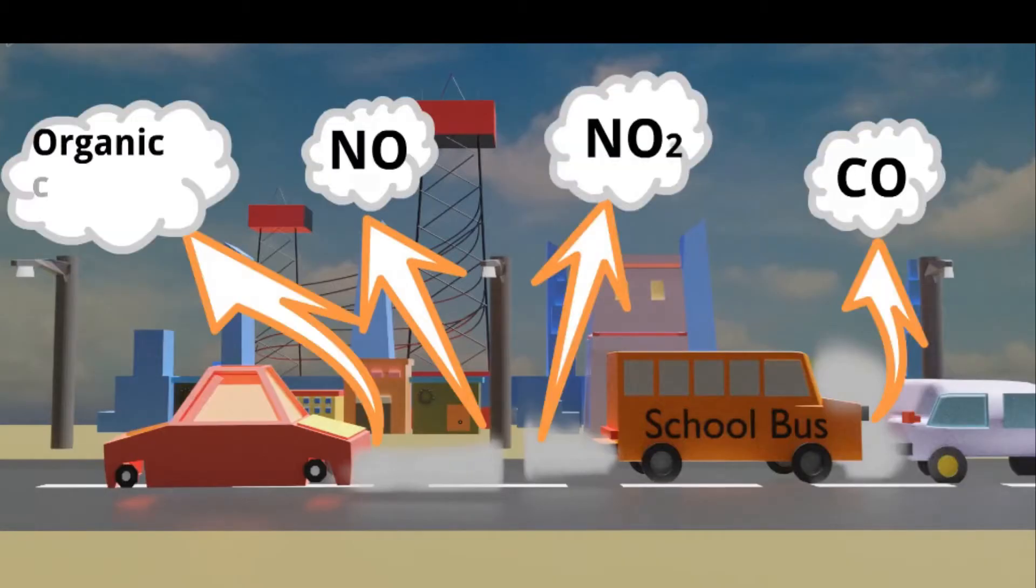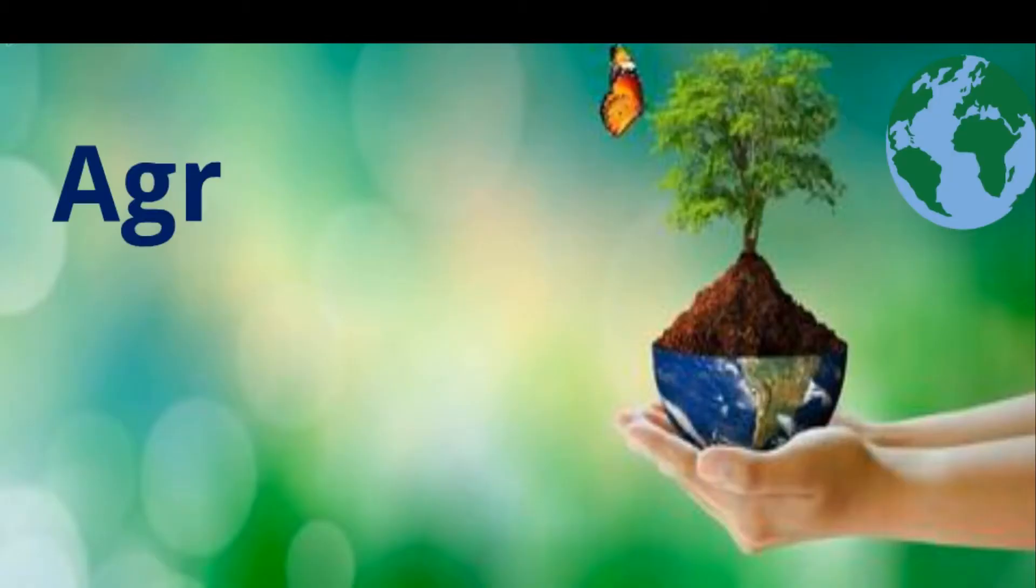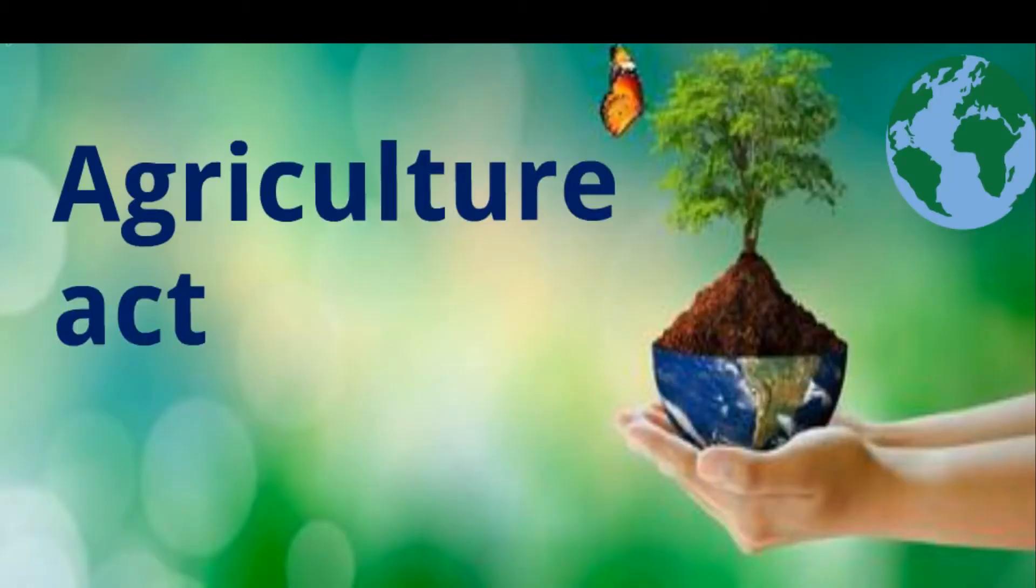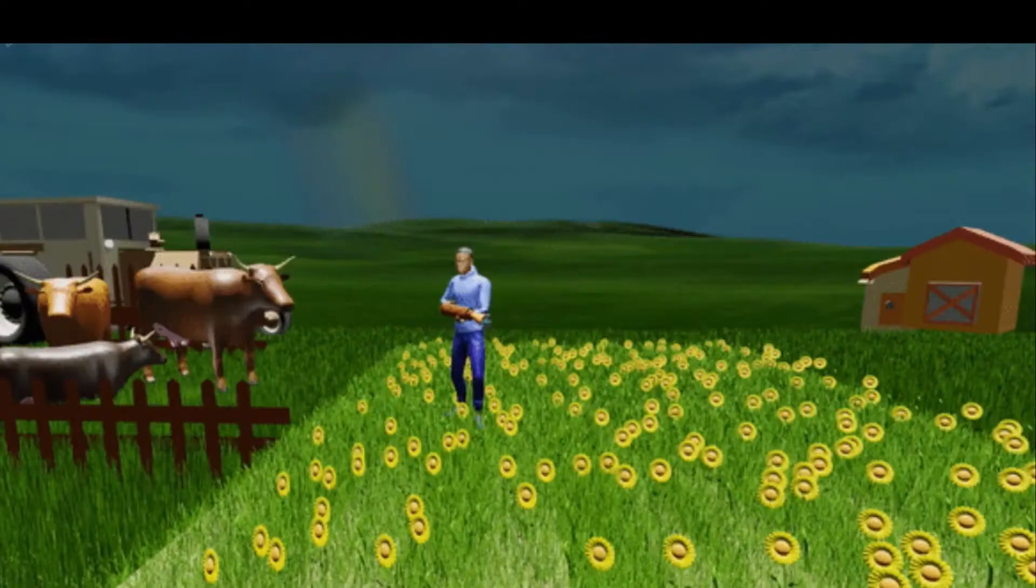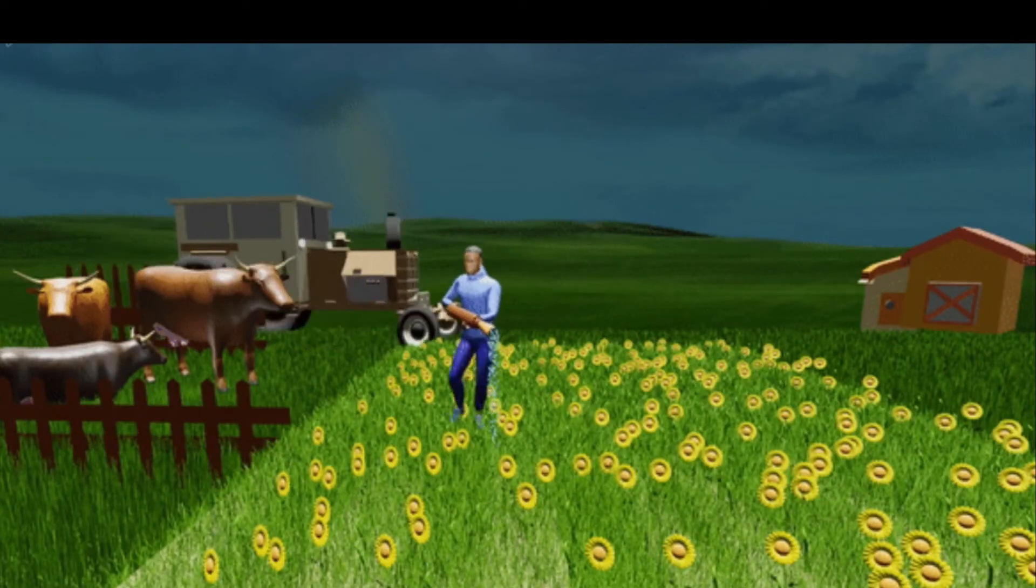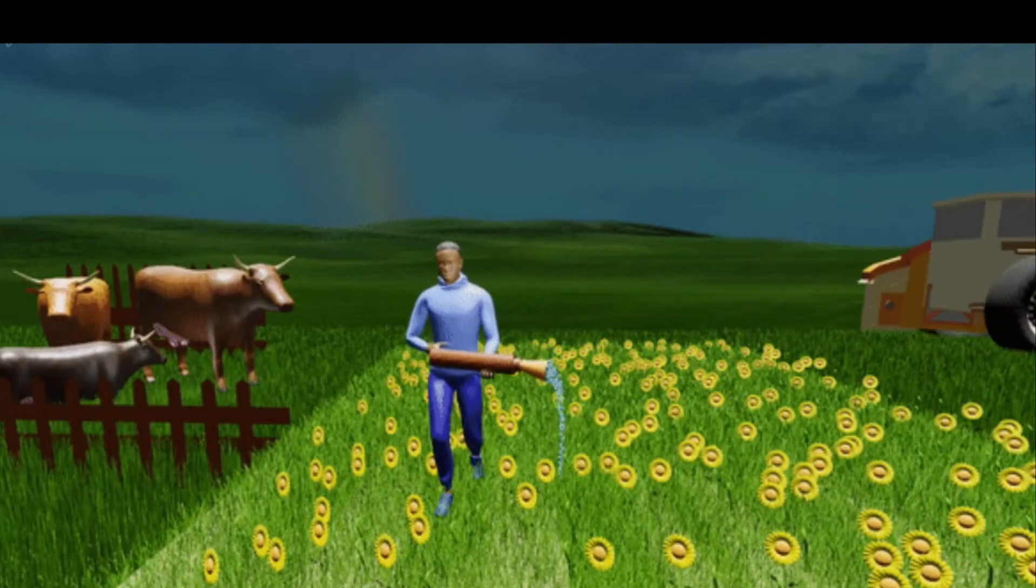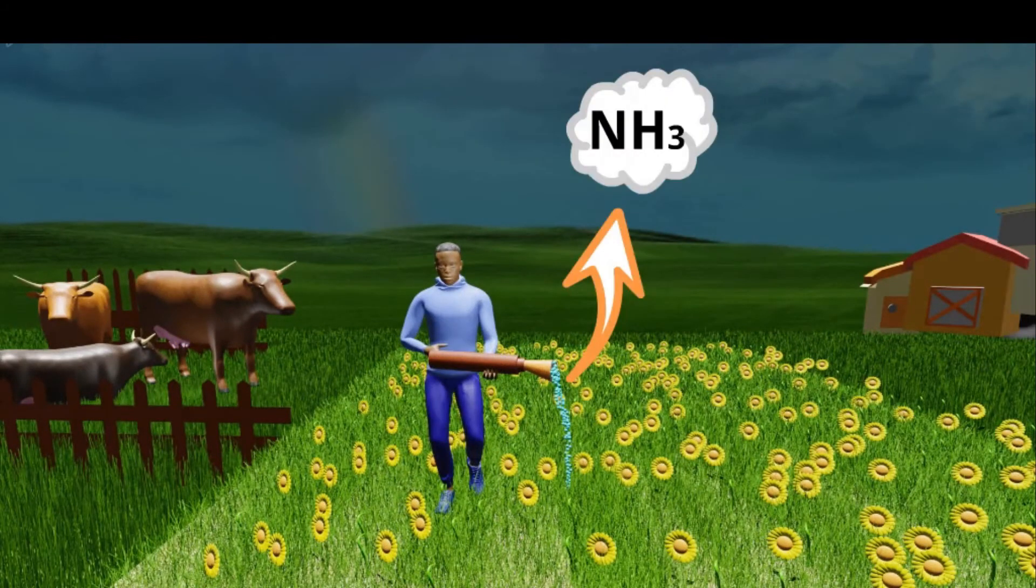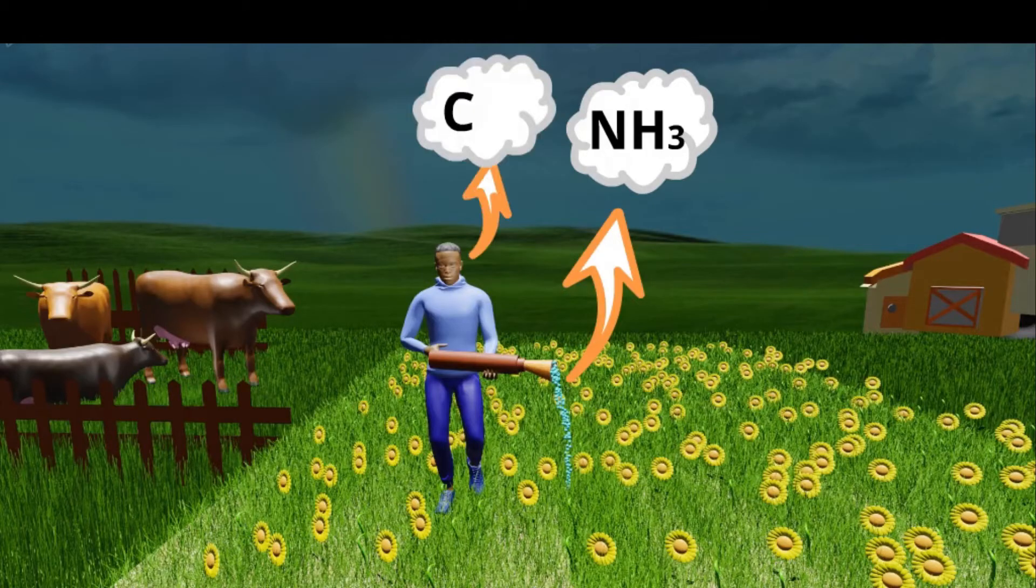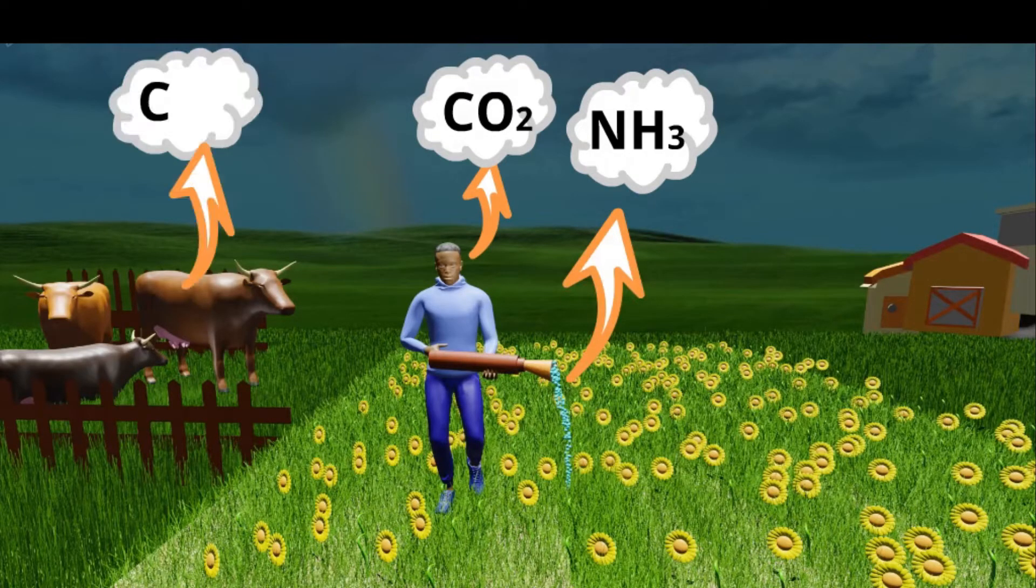In the agriculture field, use of insecticides, pesticides, and fertilizers emit harmful chemicals into the air like ammonia. Natural sources of pollution include carbon dioxide from humans during respiration and methane from cattle during digestion.